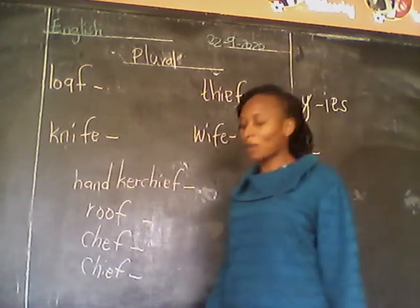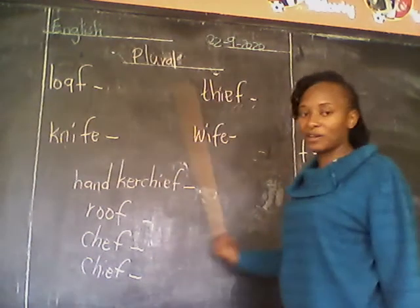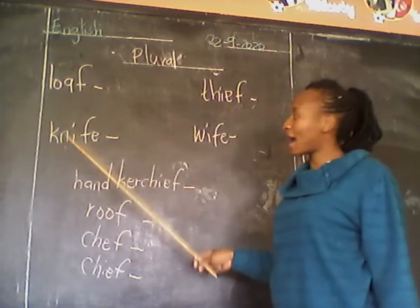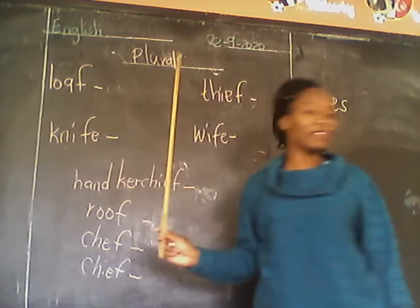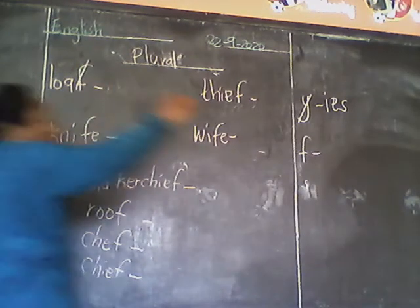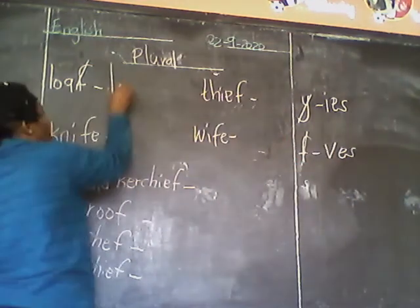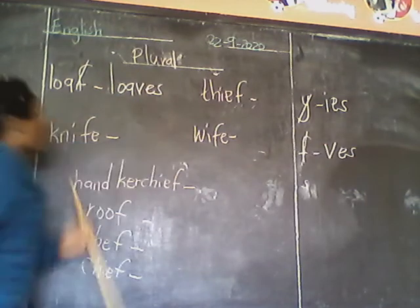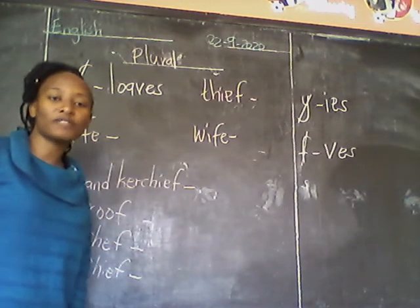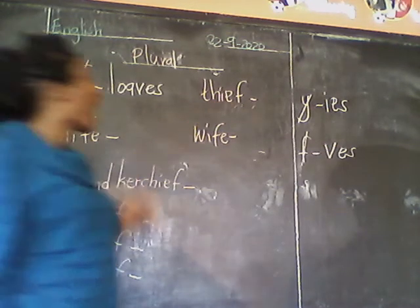But now today we have words that have F. Loaf, thief, knife, wife. Some of them end with F, others the F is in the middle. Now, how do we do it? The word loaf — we cancel F, then put VES. So one is a loaf, many are loaves. Loaves of bread. One is a thief, many are thieves — you add VES.